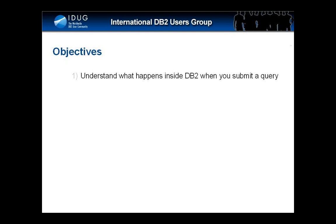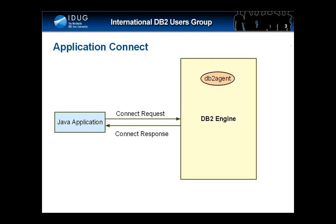Before a query can be executed, your application has to obtain a database connection. Once your application connects to the database, a DB2 agent thread is assigned to the application to act as a proxy to your application within the DB2 engine.